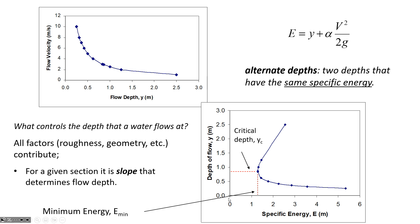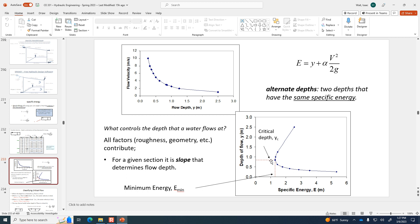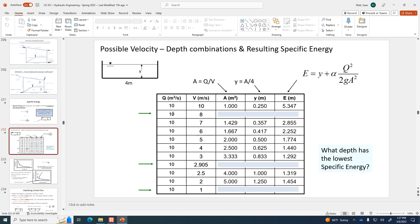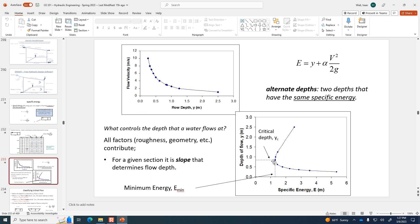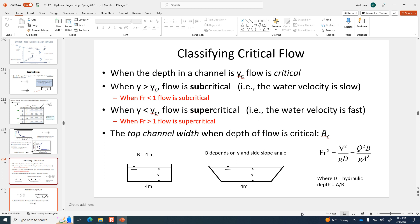You should be able to make a specific energy diagram - just pick a range of velocities and enough of them to get a good curve. You need to choose enough rows that you capture the left edge of the diagram, that minimum point. Let's now talk more about critical flow. These rules need to become second nature: critical depth is the depth with the least specific energy. Flow depth greater than critical depth means subcritical conditions; less than critical depth means supercritical.